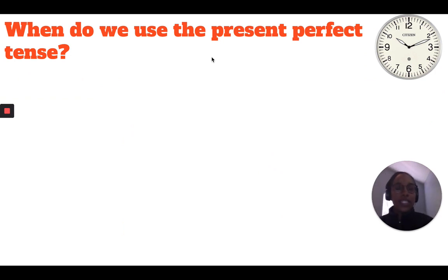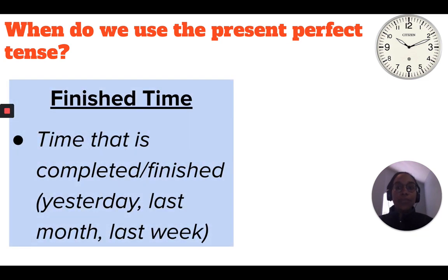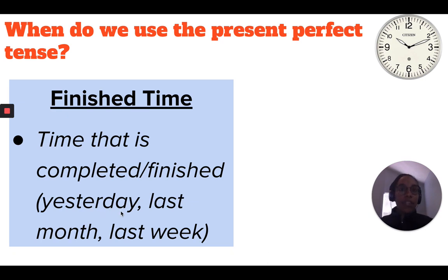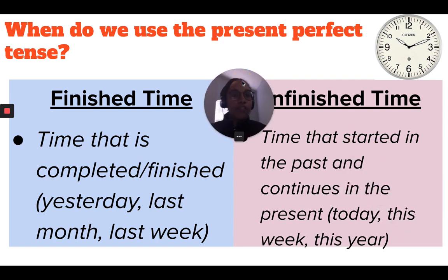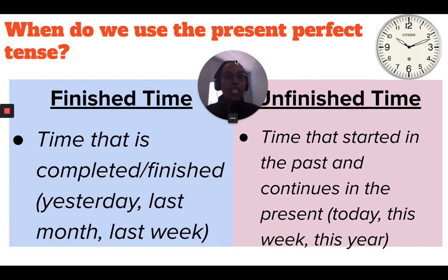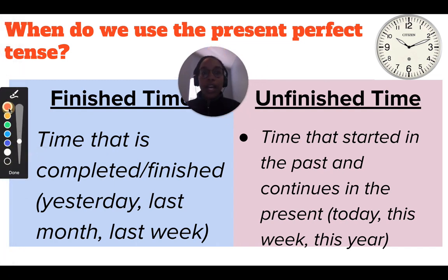Let's look at when we use the present perfect tense — this all relates to time. There are two things: finished time, which is time that has completely finished, such as something that happened yesterday, last week, or last month; and unfinished time, which is time that has started in the past and continues in the present. When we use the present perfect tense, we're actually using unfinished time.